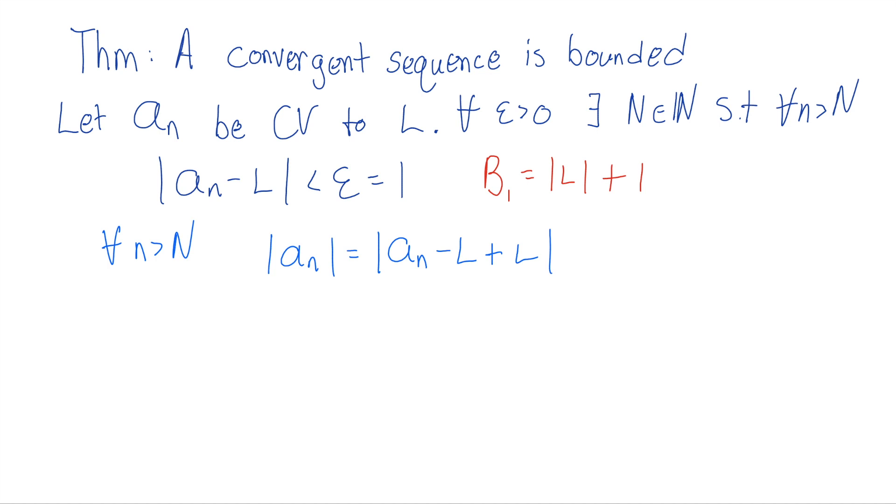We're allowed to do that. And then we do the usual thing here, which is apply the triangle inequality. We'll apply the triangle inequality like this. This has to be less than or equal to the absolute value of a sub n minus L, plus the absolute value of L.